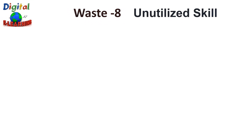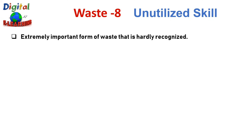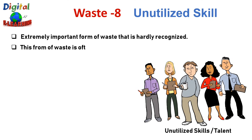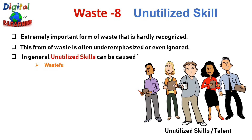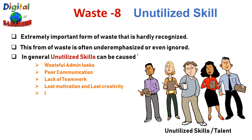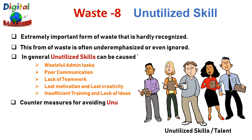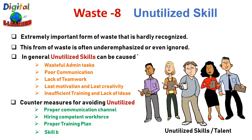The eighth and last category of waste is Unutilized Skill — an extremely important form of waste that is hardly recognized within the seven deadly wastes. One reason this waste is underutilized or ignored by companies is that responsibility for it lies squarely on the shoulders of management. Unused human potential often results from management policies and styles that diminish employee contribution. Causes include wasteful admin tasks, poor communication, lack of teamwork, lost motivation, lost creativity, insufficient training, and lack of ideas. Countermeasures include proper communication channels, hiring a competent workforce, proper training plans, and skill-based job assignments.